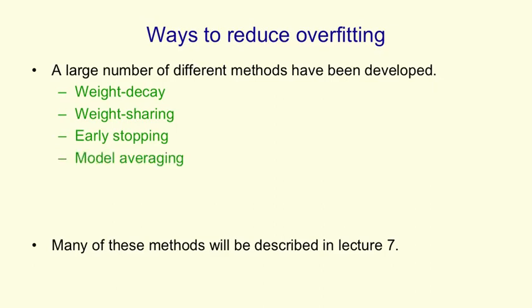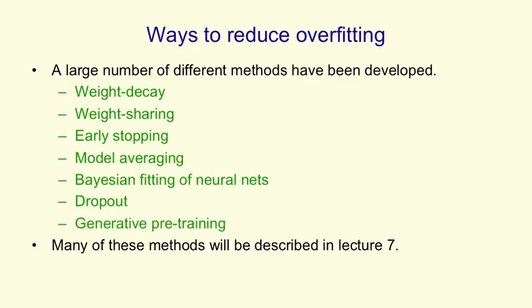There's model averaging, where you train lots of different neural nets, and you average them together in the hopes that that will reduce the errors you're making. There's Bayesian fitting of neural nets, which is really just a fancy form of model averaging. There's dropout, where you try and make your model more robust by randomly omitting hidden units when you're training it. And there's generative pre-training, which is somewhat more complicated and I'll describe towards the end of the course.